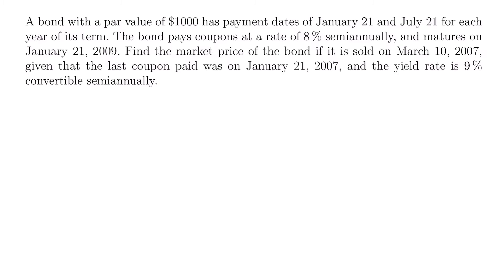The most important part here that tells us we're calculating a market price — other than the fact that it asks for the market price — is that we are given the specific dates of when the coupons are paid. We are told this bond has payment dates of January 21st and July 21st, and we want to know the price on March 10th of a specific year, which is not one of our two payment dates. Since we want to price this bond between two payment dates, we will use the market price formula.